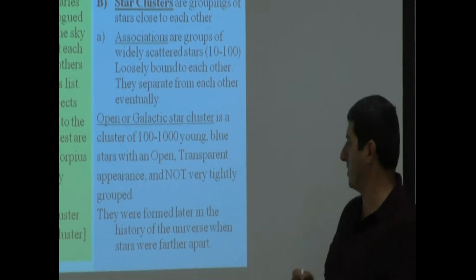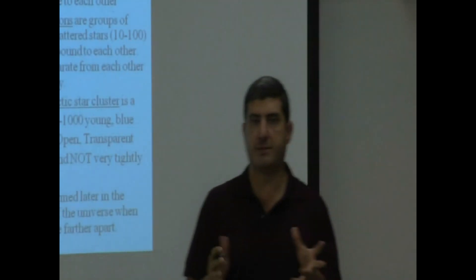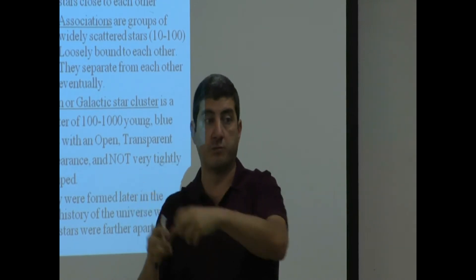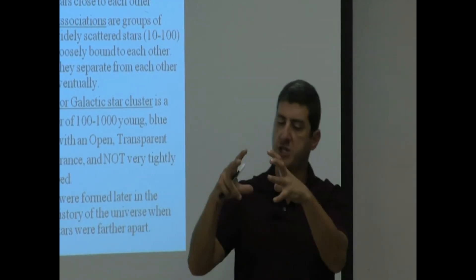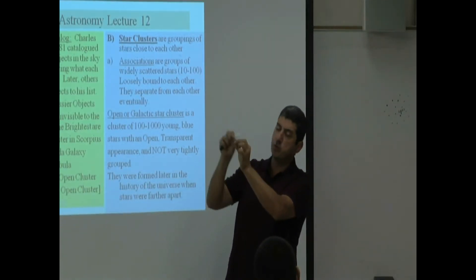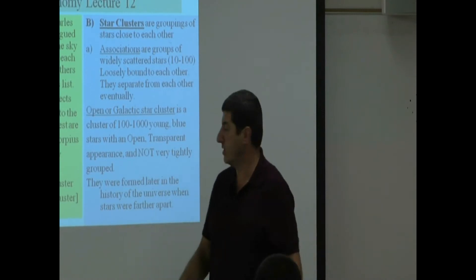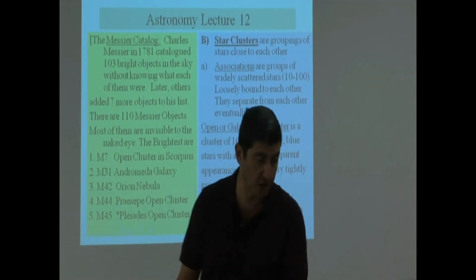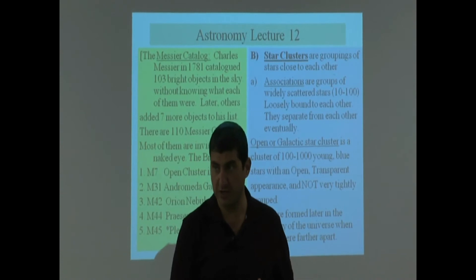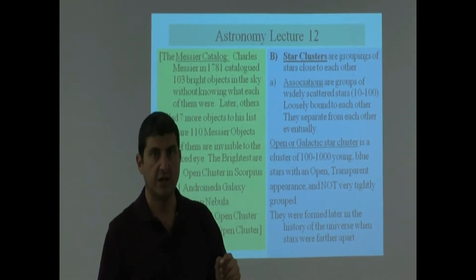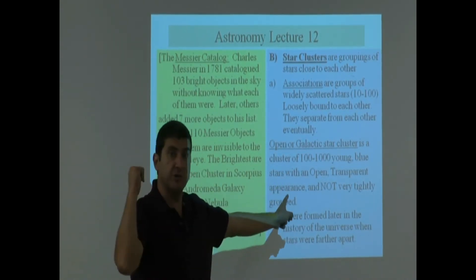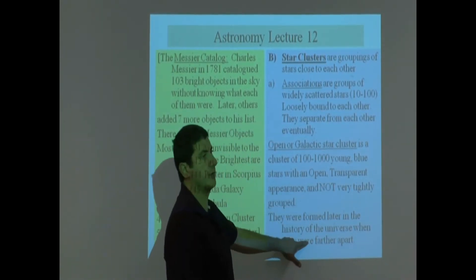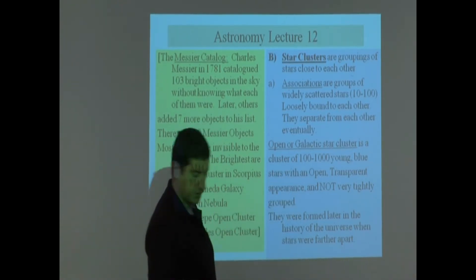Association would also be open because there's only up to a hundred stars. It would also look open. So both of them are kind of open. And they are not very tightly grouped. They were formed later in the history of the universe when stars were farther apart. So one of the things we learned about the universe is that the Big Bang happened and then the universe is growing. So clusters of stars that formed much later in the history of the universe, we would expect the distance between them to be wider apart. And so there would be more distance and they would look more open. So open clusters formed later in the universe. And that's why since they formed later, they still have big blue bright stars. Because those guys die very short, right? They live very short lives. So if the clusters had formed a long time ago, those blue stars would have died by now. So that's why open clusters have young blue stars because they were formed very late in the history of the universe.